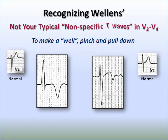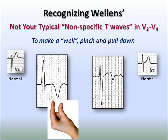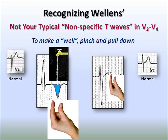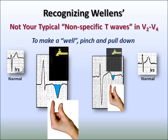The T wave changes in Wellens are not your typical non-specific T wave changes that you may see written across the top of your 12-lead ECG. I like to think of these as wells — how do you create a well? You pinch and pull the T wave down, and then it can fill up with water. So in both Type 1 and Type 2, pinch and pull the T wave down, make a well, fill it up with water.